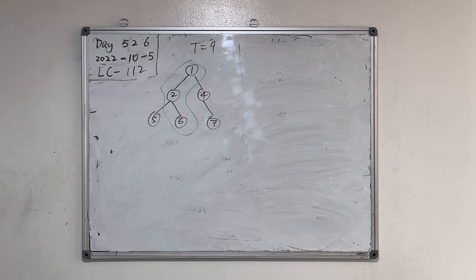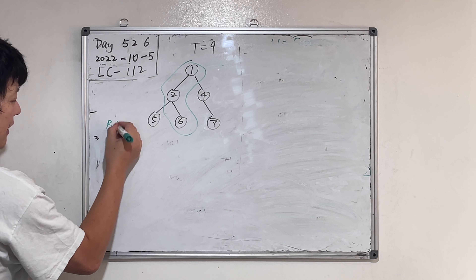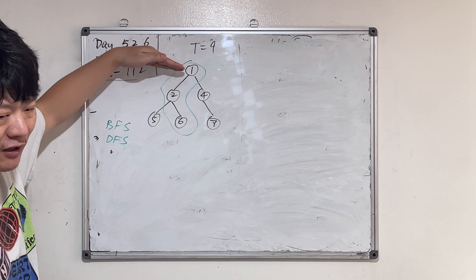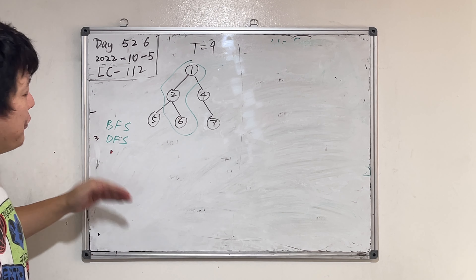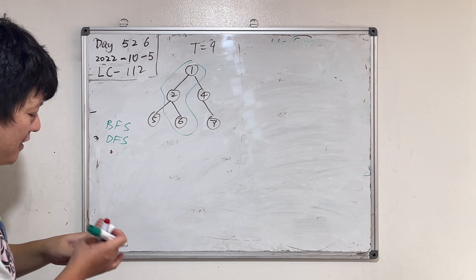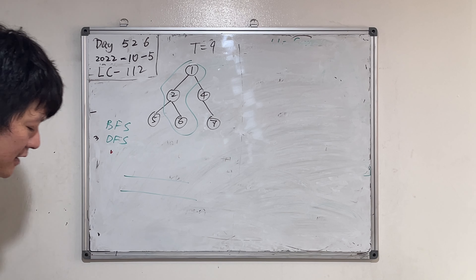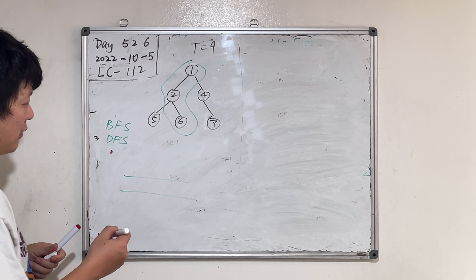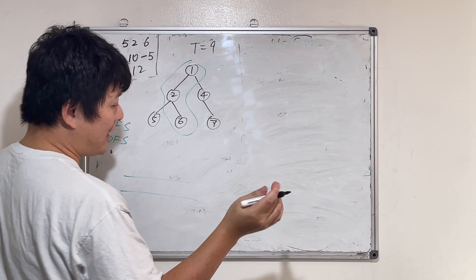What kind of algorithm can we apply in the binary tree — how do we traverse a binary tree? Level by level — breadth-first search and depth-first search, BFS and DFS. In BFS, the order is 1, 2, 4, 5, 6, 7 — level by level, using the queue, double-ended queue. Remember, we talked about lots of these tree algorithms.